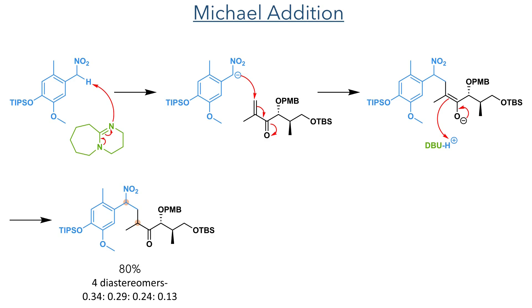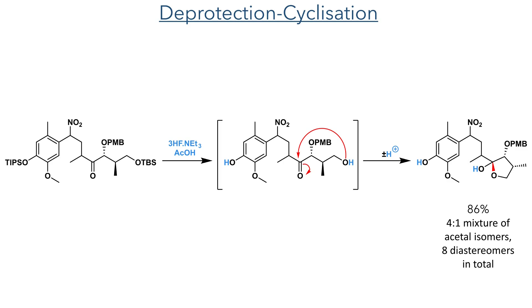As this reaction forms two new chiral centres, four diastereomers were formed without any significant selectivity. This mixture was taken forward to a deprotection followed by cyclisation. Reacting the compound with triethylamine trihydrofluoride deprotects the TBS group, and the newly revealed primary alcohol undergoes a spontaneous cyclisation to form a five-membered hemiacetal. This reaction also forms a new chiral centre with a 4-to-1 mixture of acetal isomers, resulting in eight diastereomers in total.